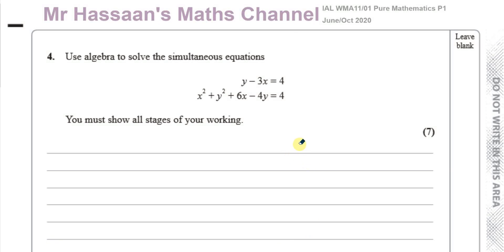Welcome back. This is question number four from the Pure Mathematics P1 International A-Level Edexcel paper from June 2020. This question is about simultaneous equations — we have a pair of simultaneous equations, one of which is a linear equation and the other looks like the equation of a circle, and we have to find the solution to this pair.